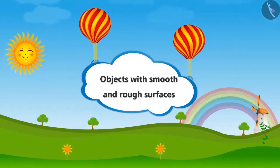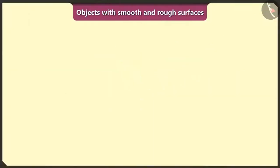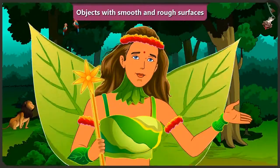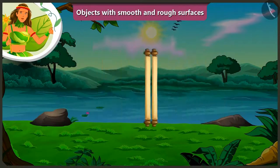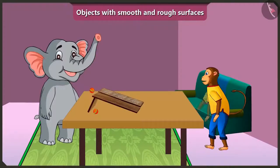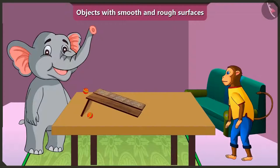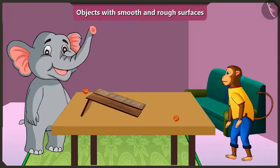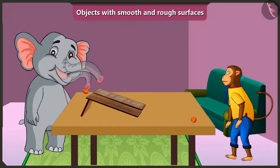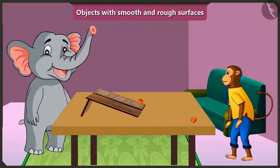Objects with smooth and rough surfaces. Today we will learn about the things around us with smooth or rough surfaces. Hey Appu, what are you doing here? I have two similar balls - when I roll them, the ball rolls down faster on this wooden slope, but on the other slope the ball rolls down slowly. Why is it so, Jagu?